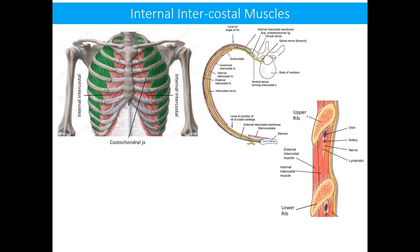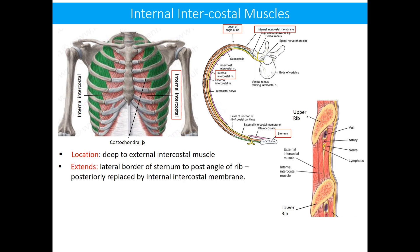The second group of intercostal muscles is the internal intercostal muscle. These are located deep to the external intercostal muscles and extend from the lateral border of the sternum anteriorly to the posterior angle of the rib posteriorly. Beyond the posterior angle of the rib, the muscle is replaced by the internal intercostal membrane.